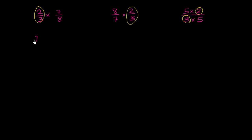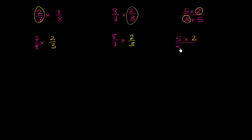This first expression could be rewritten as 7/8 times 2/3. This second expression could be written as 8/7 times 2/3. And then this last expression — we could write it as 5 times 2 in the numerator over 5 times 3 in the denominator, which is the same thing as 5/5 times 2/3.